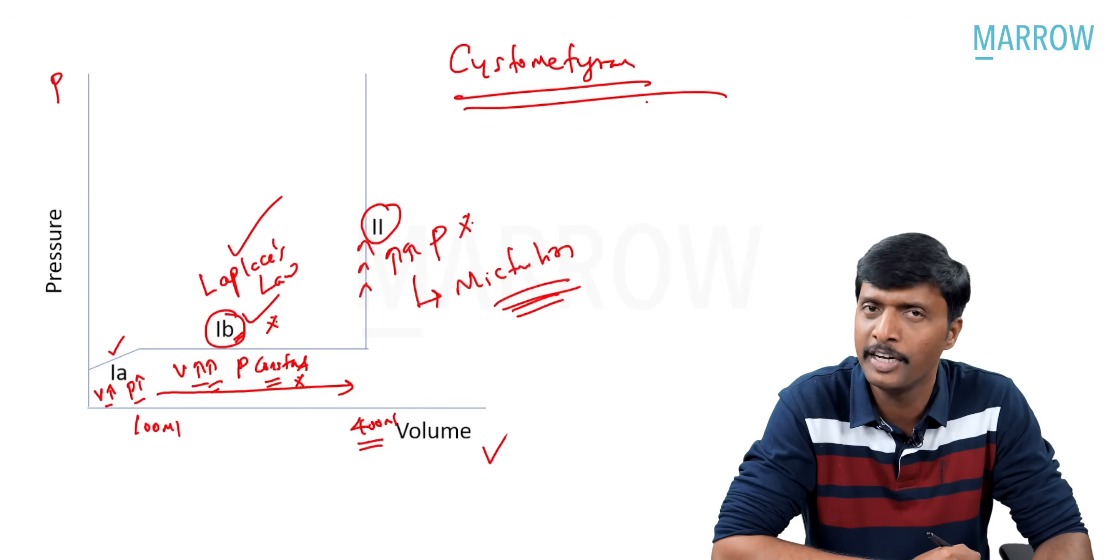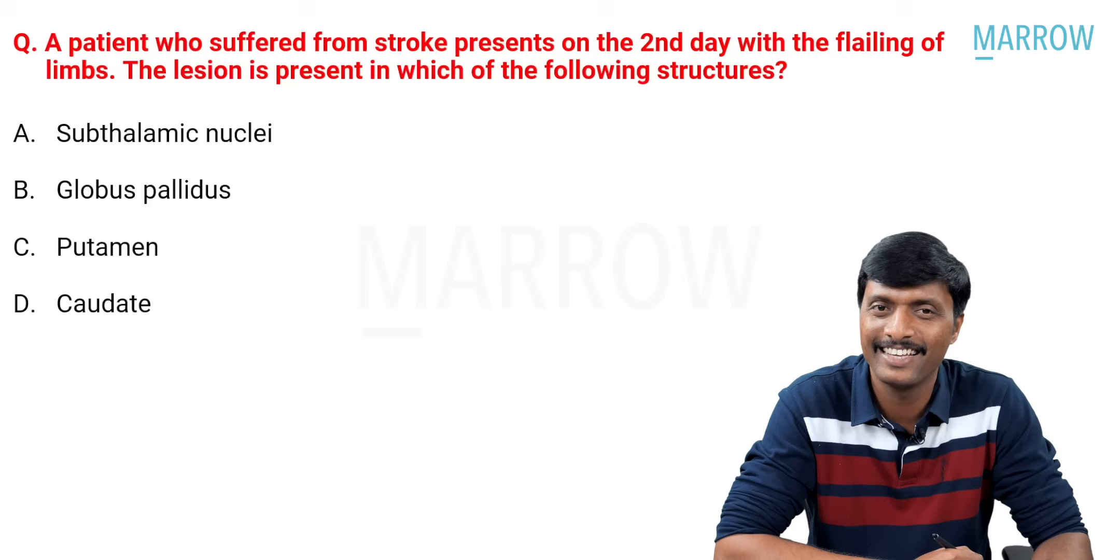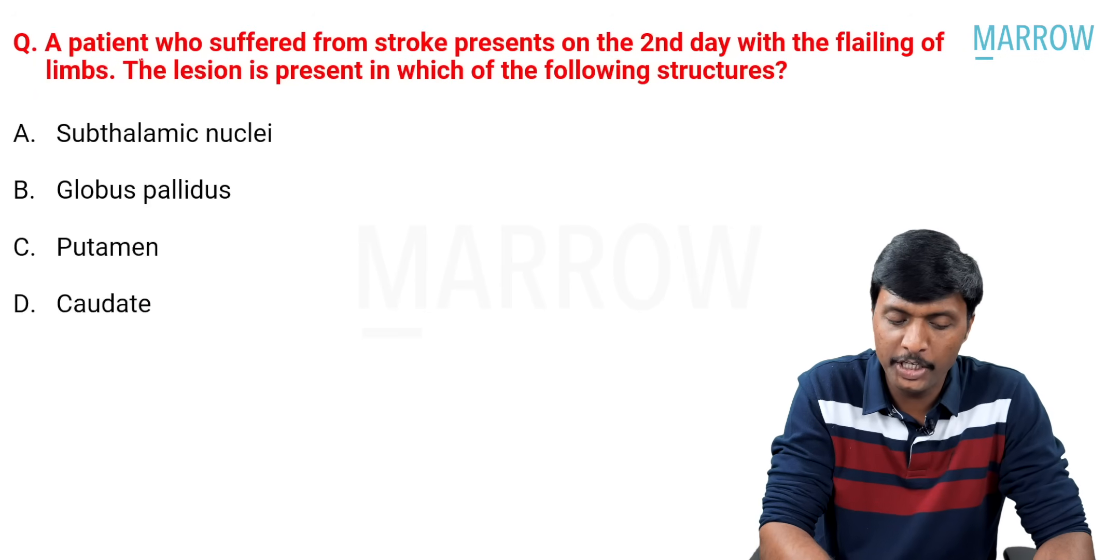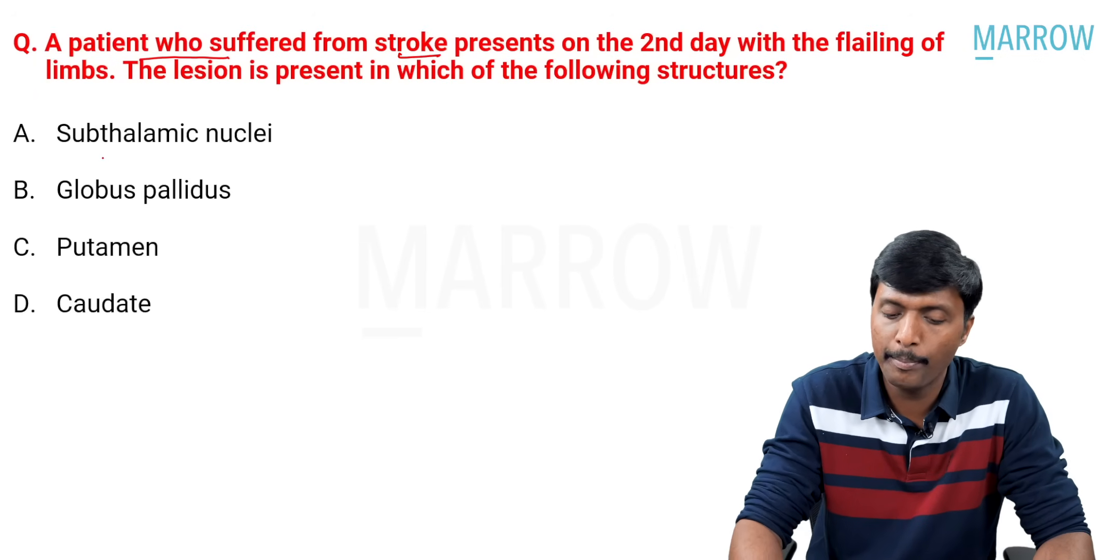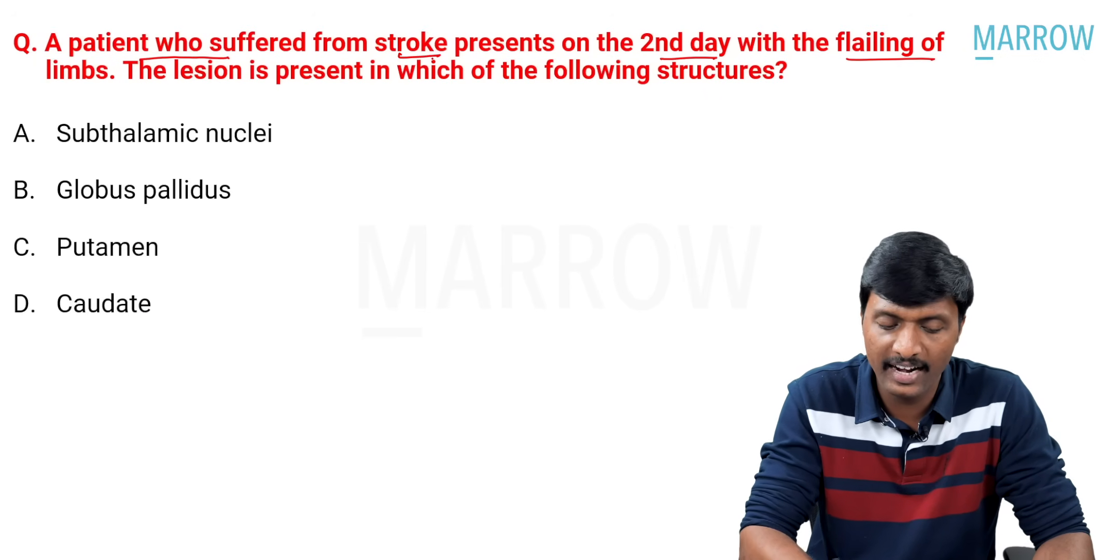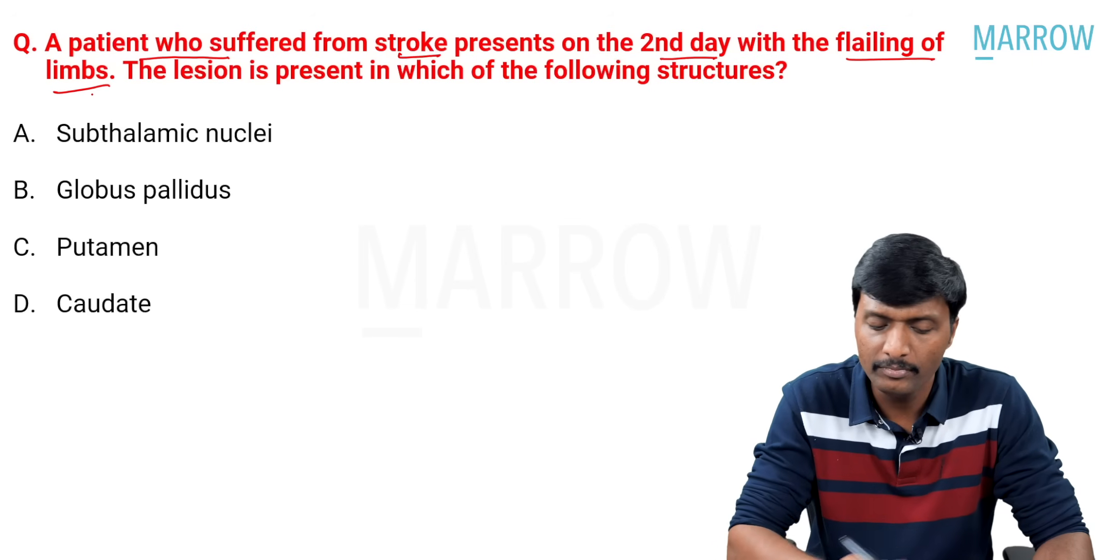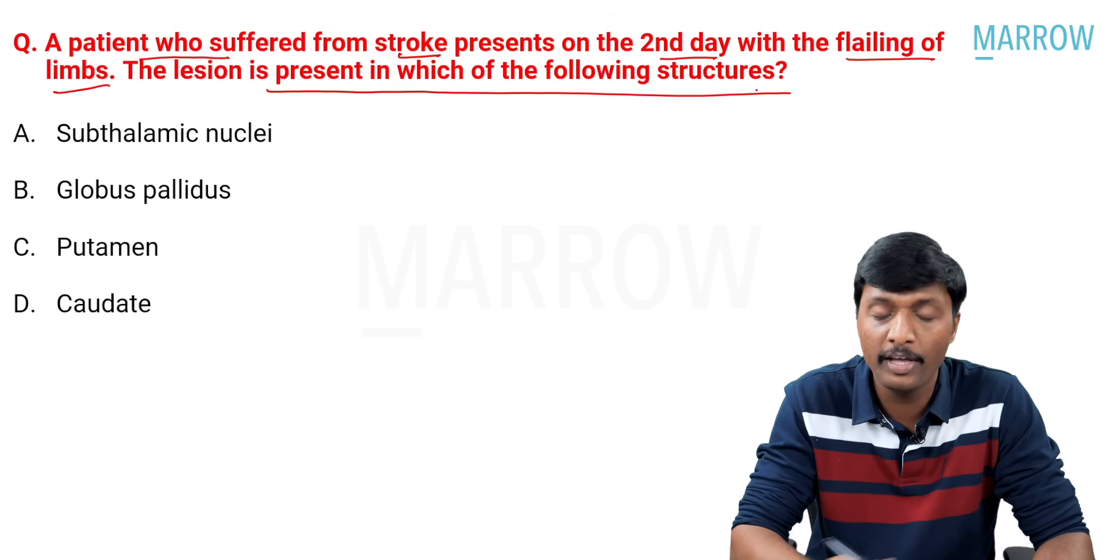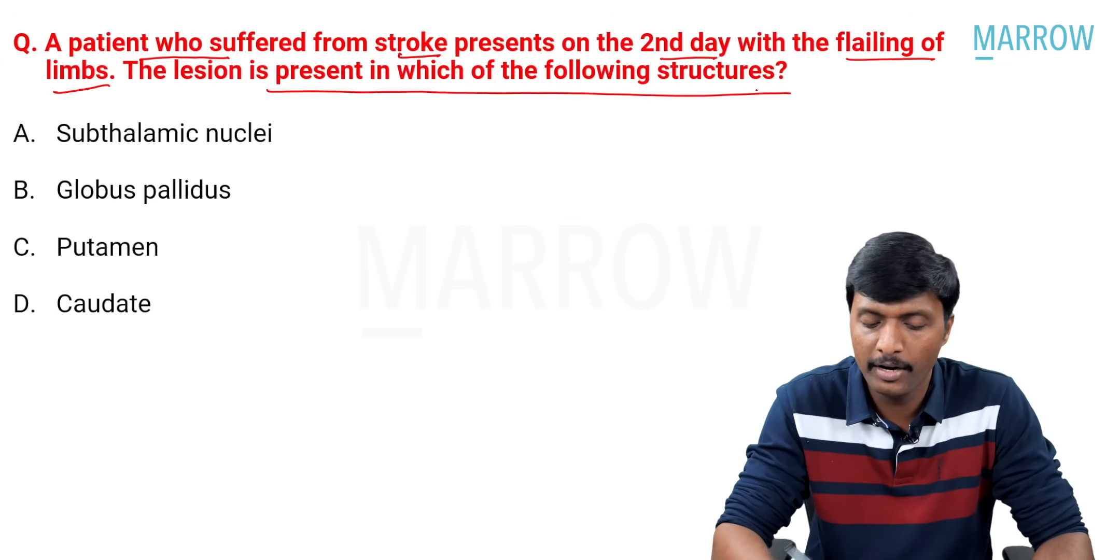The concept we have discussed is the cystometrogram. Sure, short repeat question. Definitely, it will come again. Next. A patient who suffered from stroke presents on the second day with the flailing of limbs. The lesion is present in which of the following structure?